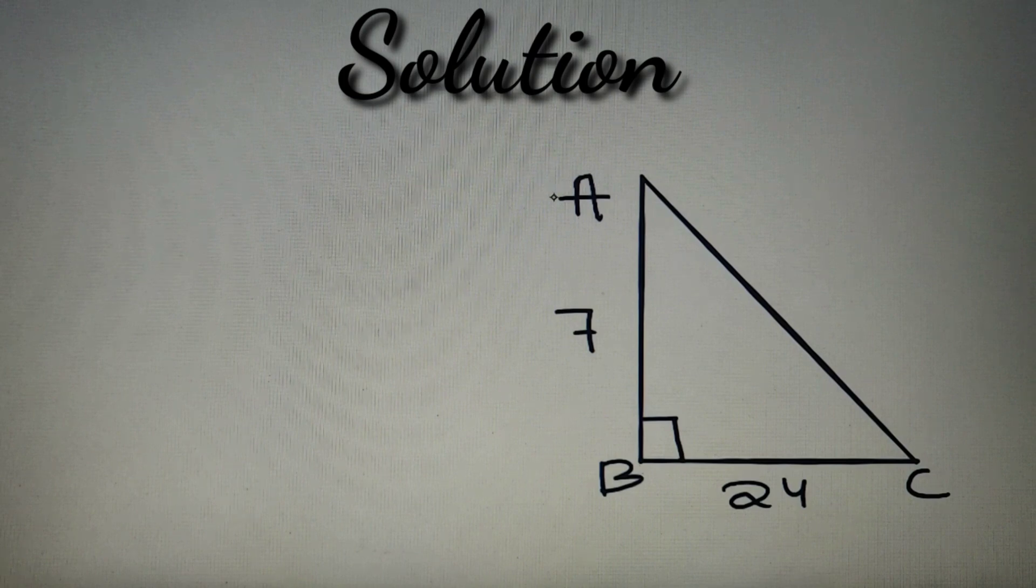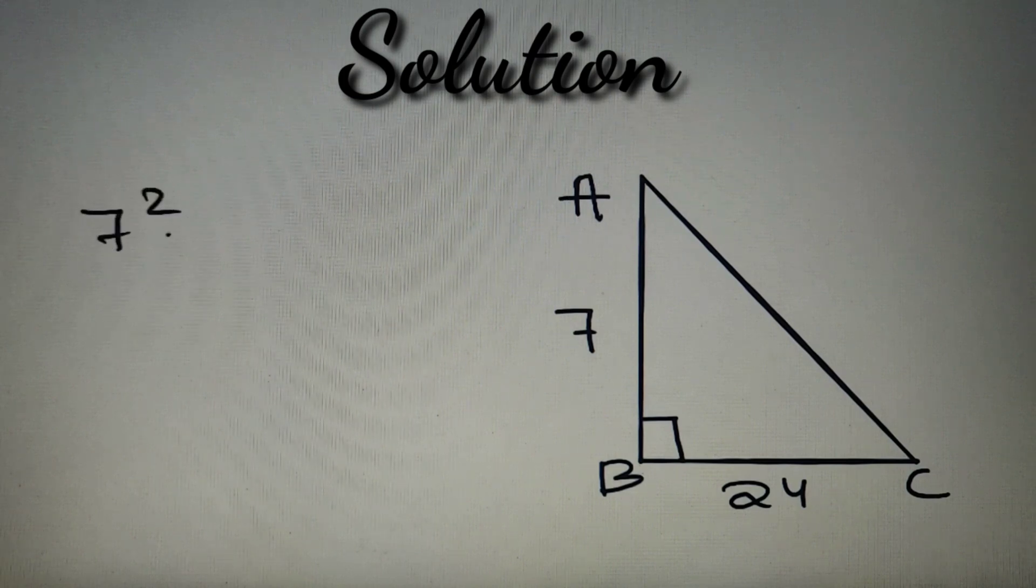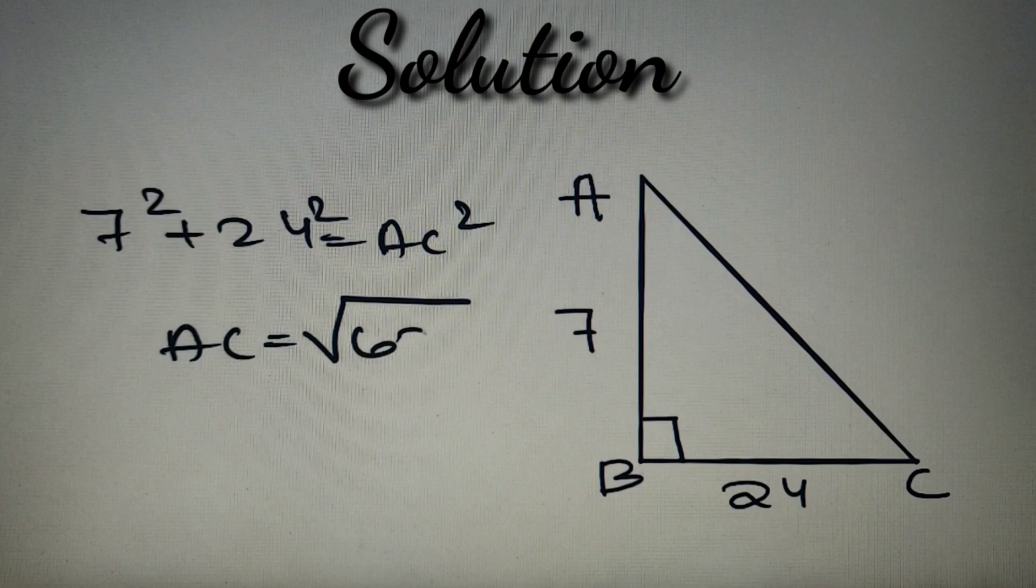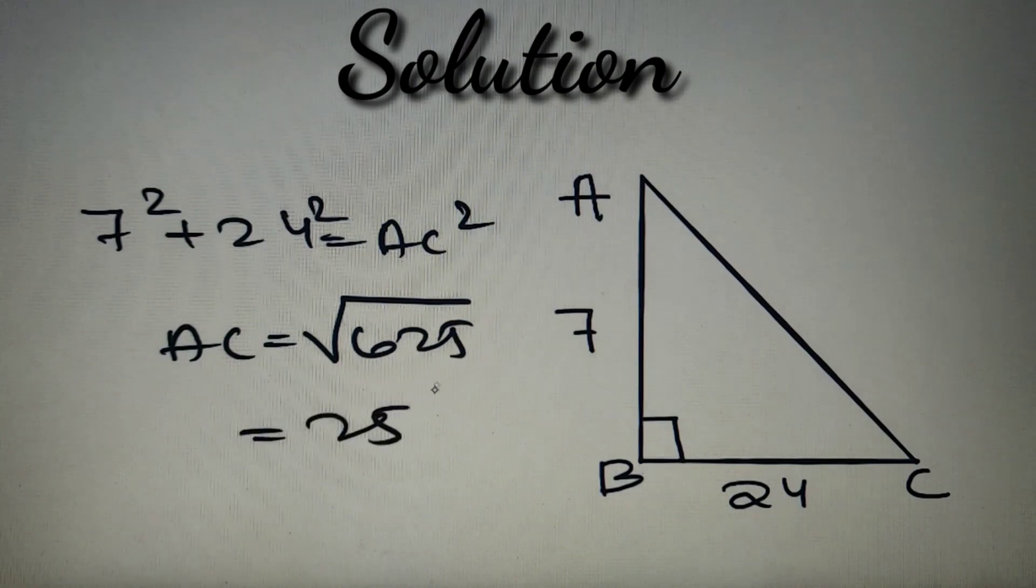We can find the length of side AC by using the Pythagorean theorem: 7 squared plus 24 squared equals AC squared. That implies AC equals the square root of 625, which is 25. So we have got the length of side AC as 25.